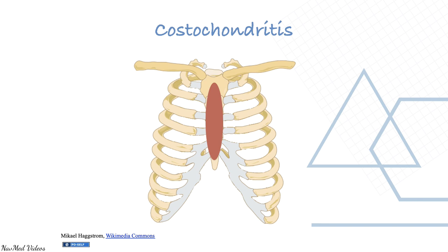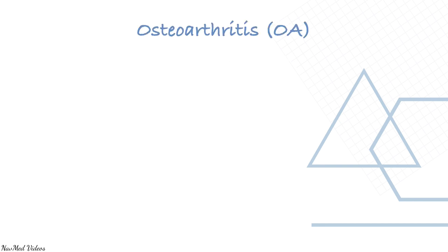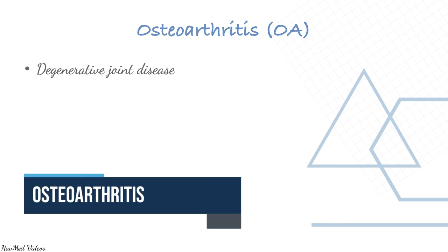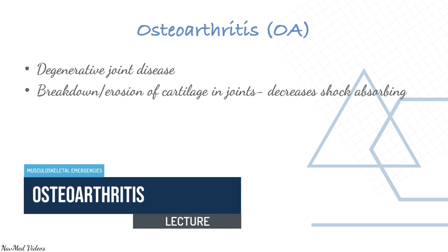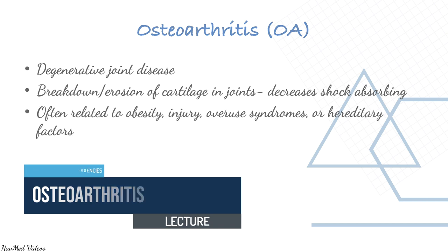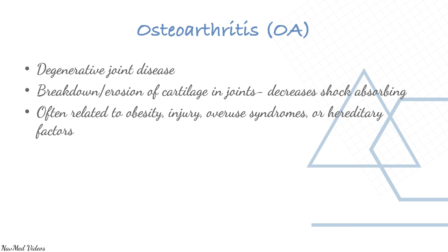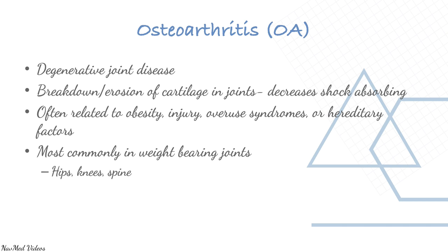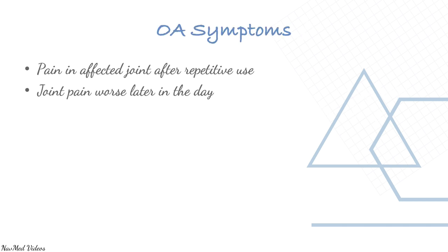Osteoarthritis is a degenerative joint disease characterized by breakdown or erosion of cartilage in joints. It is often related to obesity, injury, overuse syndromes, or hereditary factors. It is most common in weight-bearing joints like hips, knees, and spine.